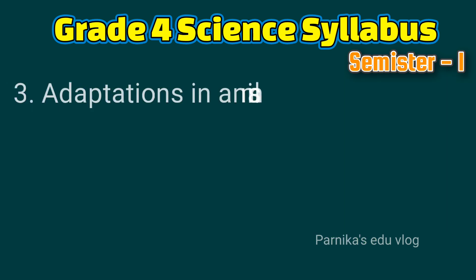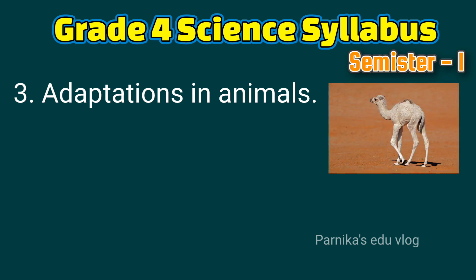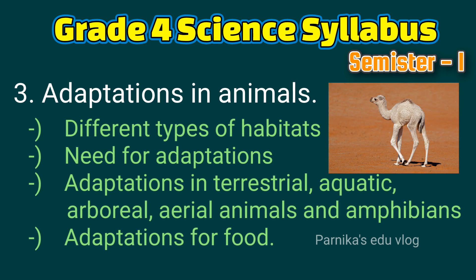The third lesson is adaptations in animals. In this lesson we have different types of habitats, need for adaptations, adaptations in terrestrial, aquatic, arboreal, and aerial animals and amphibians, and adaptations for food. In this lesson we can understand different types of habitats and adaptations shown by animals based on the environment, just like the second lesson. So this is a wonderful lesson to understand about animals.